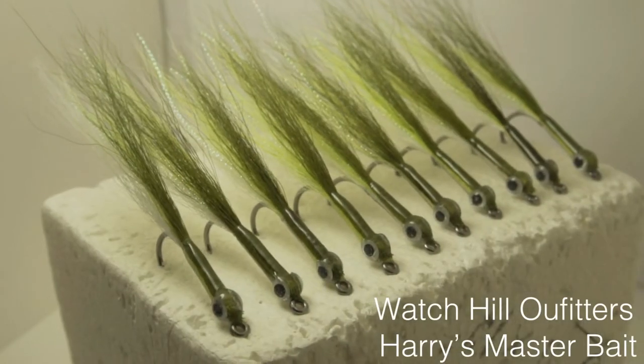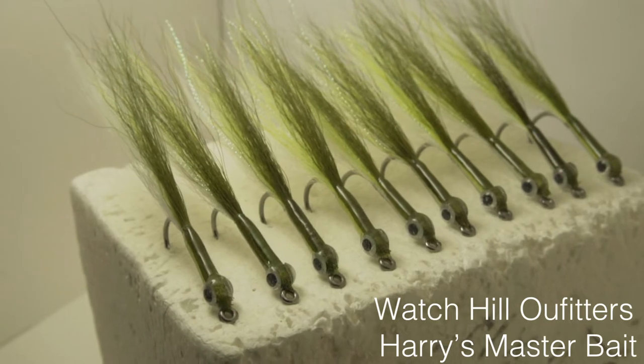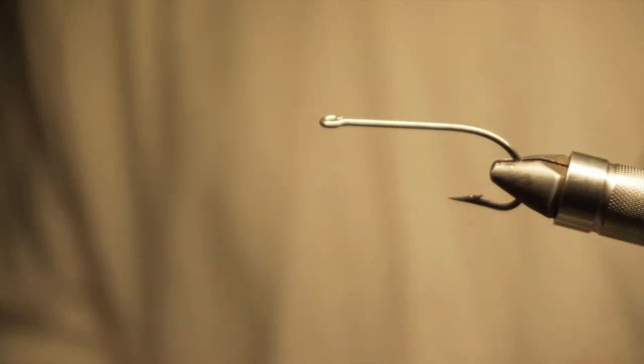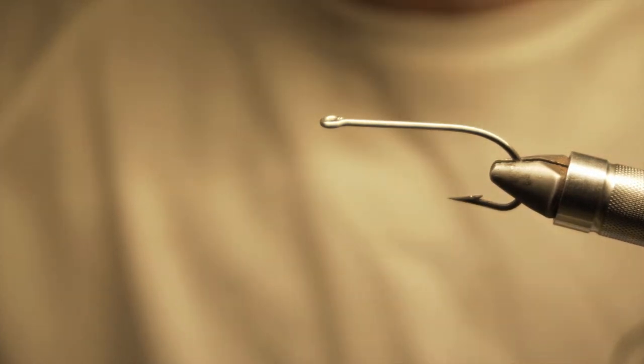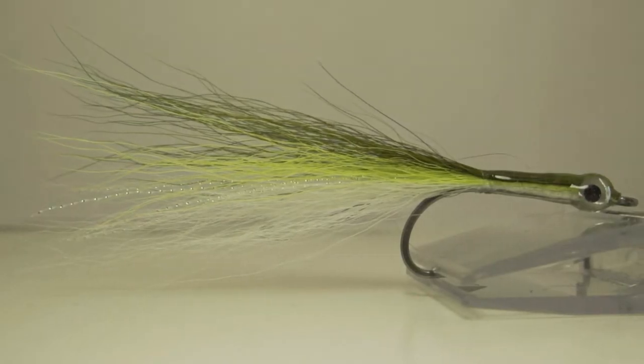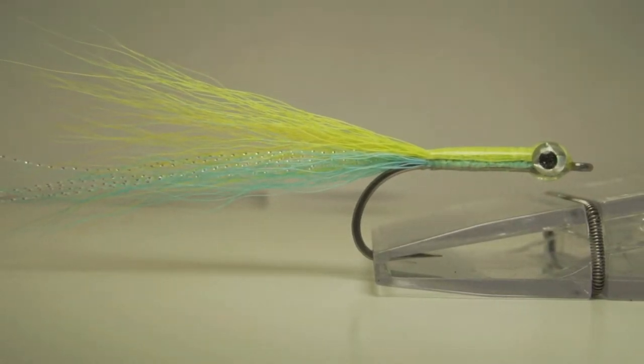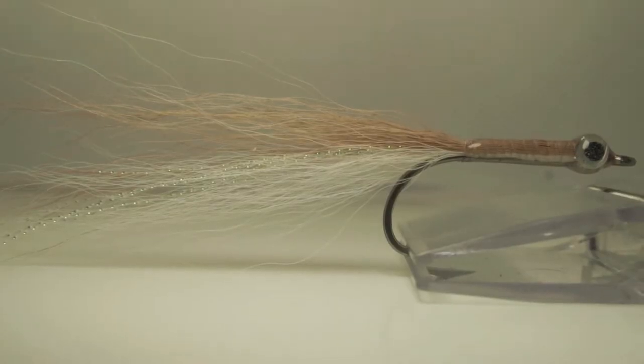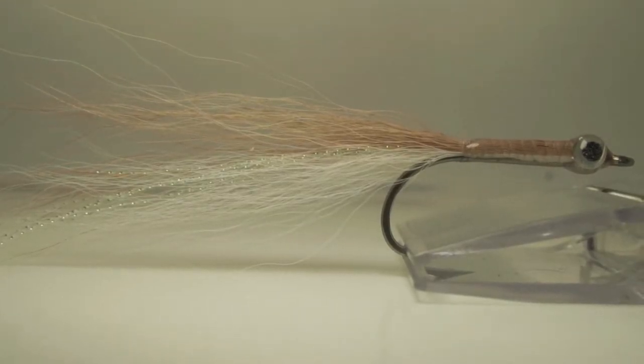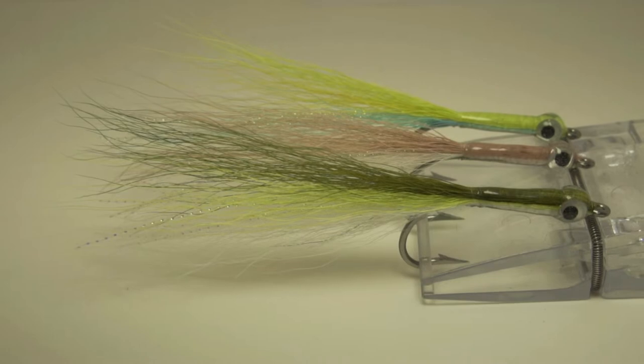Hey guys, this is Harrison with Watchel Outfitters. Today I'm going to be showing you how to tie a fly that I've been tying for about 10 years. Only recently has it gotten a name. My boss came up with this, not me, so don't make fun. This is called Harry's Master Bait and it is a killer for striped bass, bluefish, albies, bonito, basically any game fish in the New England area.